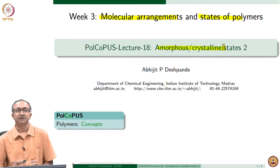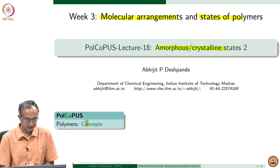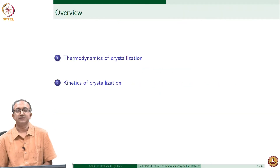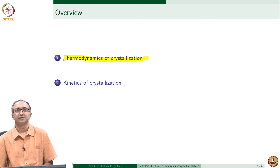We looked at what happens when temperature is brought below the melting temperature, where crystallization can happen in polymers, and what may be the ways in which a polymer crystal can form. We also looked at what may be the reasons behind some polymers being semi-crystalline and some being completely amorphous. The focus in this lecture will be on conceptual understanding.